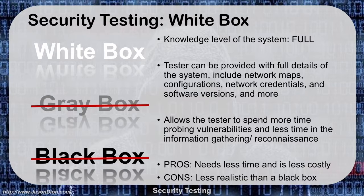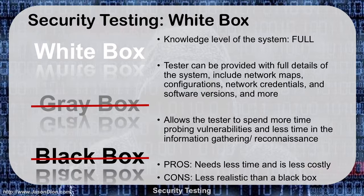This allows the tester to spend more time probing vulnerabilities and less time in the information gathering or reconnaissance phases. In a black box test, 80 to 90% of your time is in the information gathering and reconnaissance phases trying to figure out how to break in. With white box, they've already given you a roadmap. They know where you're going. For an organization on a budget, white box may be a good idea, as it is less time-consuming and less costly.